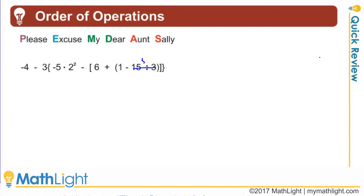So 15 divided by 3 is 5. All right, so we got a negative 5. Now we're going to finish off this parentheses. Positive 1 and negative 5 is a negative 4. That parentheses is a negative 4.